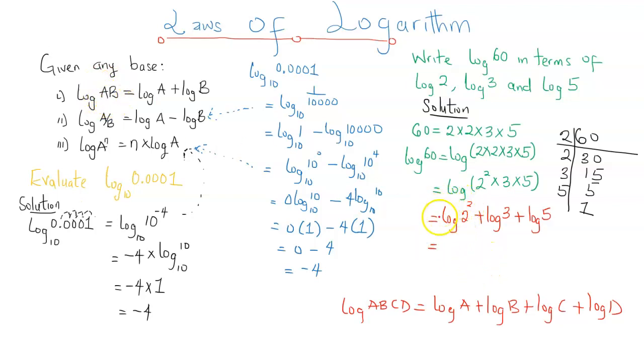The third law is going to help us here. Log 2 squared. Here is an index. So this is just going to be 2 log 2 plus log 3 plus log 5. That's our final answer.